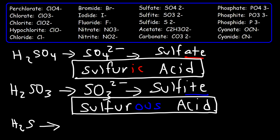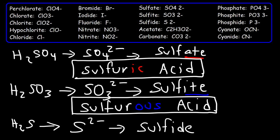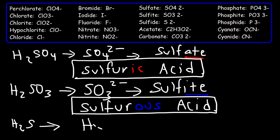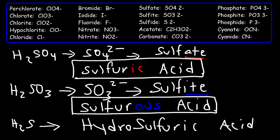For H2S, if we take off the two hydrogen ions, we get the ion sulfide. S²⁻ is called sulfide. We need to take off the suffix '-ide' and add 'hydro' plus '-ic' plus 'acid'. So this is going to be called hydro... then we write the element sulfur, then the suffix '-ic', and acid. So if you see '-ide', add the prefix 'hydro', the suffix '-ic', and the word 'acid'. That's how you write the name for H2S — hydrosulfuric acid.